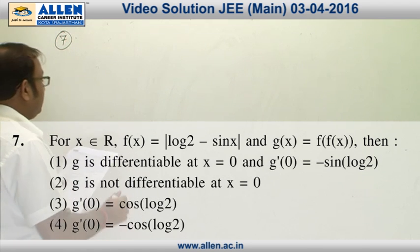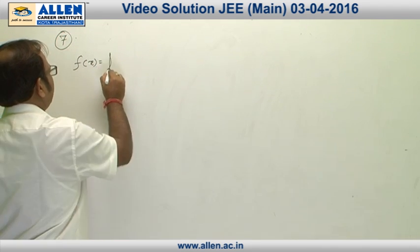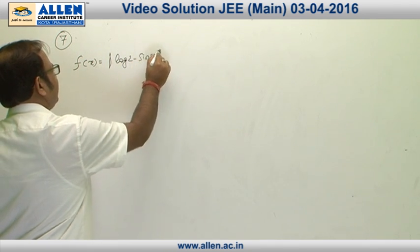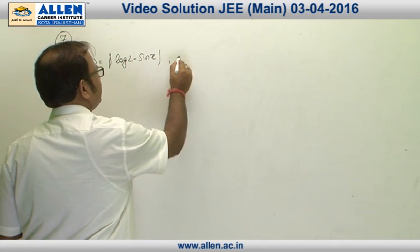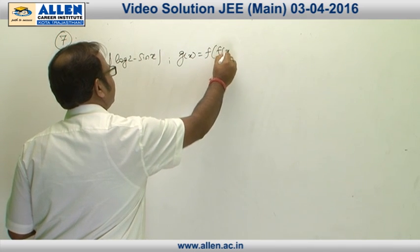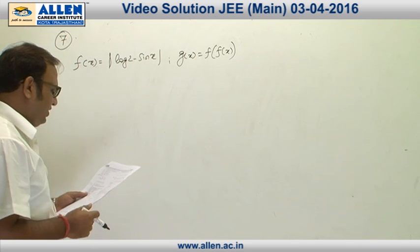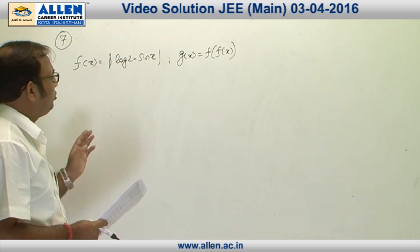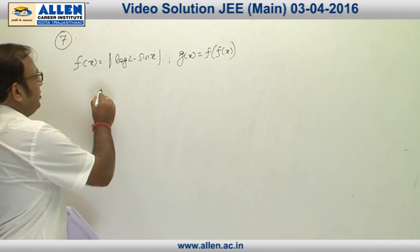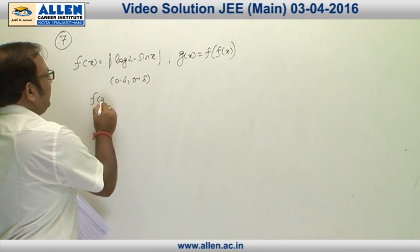In question 7, we are given two functions: f(x) = |log(2 - sin x)| and g(x) = f(f(x)). The point under consideration is x = 0. In the neighborhood of 0, log 2 will always exceed sin x, so for the interval (0 - δ, 0 + δ), f(x) can be written directly as log(2 - sin x).